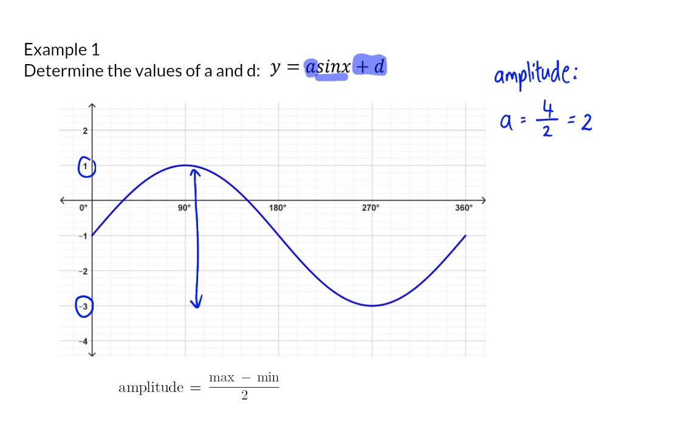This amplitude indicates that we can move 2 units down or 2 units up to find our new midline or resting position. This of course originally was our x-axis, so now we can see that this graph moved 1 unit down.